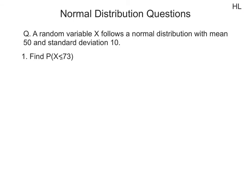Let's take a look at a question. The question states that a random variable x follows a normal distribution with mean 50 and standard deviation 10. Find the probability that x is less than or equal to 73.